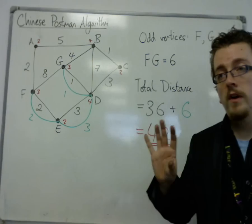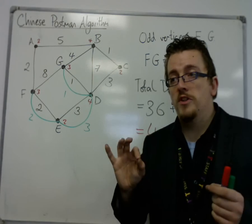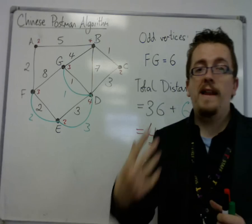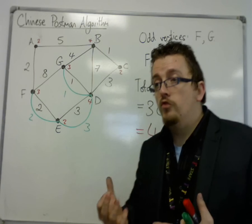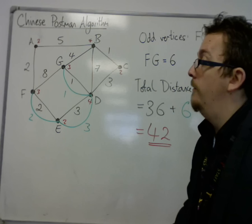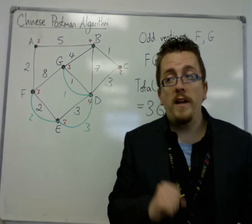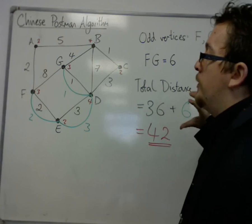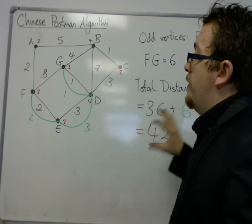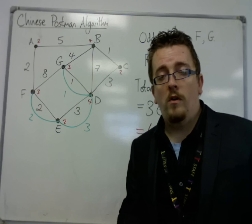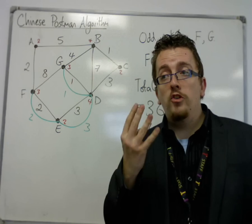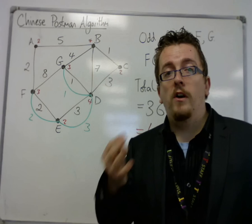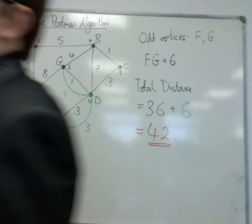It's all a case of adding in the shortest route - the shortest amount of edges - that will make the graph Eulerian. You don't actually have to draw the edges into the graph unless you really want to. Traditionally, this problem has more than 2 odd vertices - it is usually 4 - and we will see a couple of examples of how we deal with that.